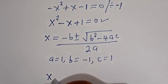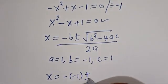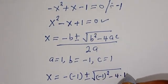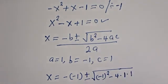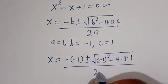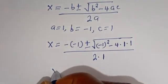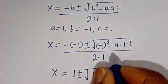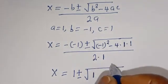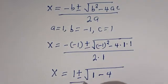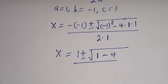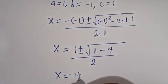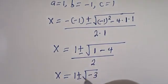We have X is equal to minus bracket minus 1, plus or minus square root of minus 1 squared, minus 4 multiplied by 1 multiplied by 1, divided by 2 multiplied by 1. Simplifying: minus minus 1 is 1, and 1 squared is 1, so we get 1 plus or minus square root of 1 minus 4, which is minus 3, divided by 2.